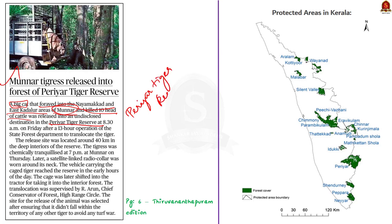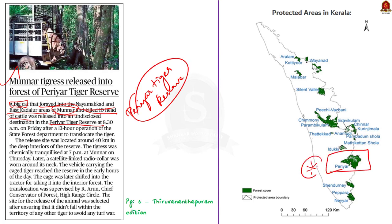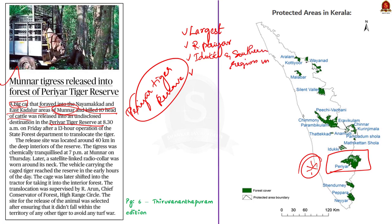The Periyar Tiger Reserve, or Periyar Sanctuary, is the oldest wildlife sanctuary in Kerala and is also credited with having the largest protected area. It gets its name from the river Periyar, which has its origin deep inside the reserve. It falls in the districts of Idukki and Pathanamthitta in Kerala and is situated in the southern region of the Western Ghats. It was declared a sanctuary in 1950 and a Tiger Reserve in 1978.